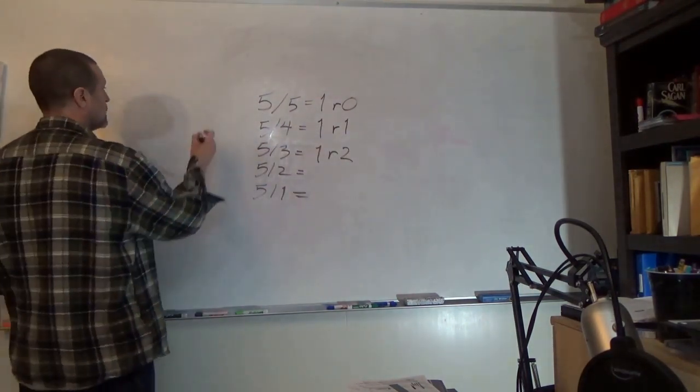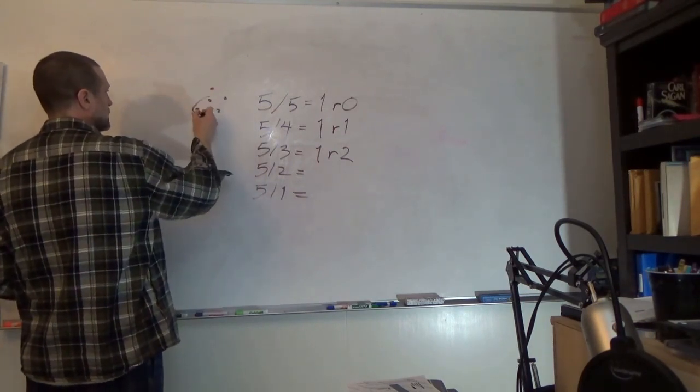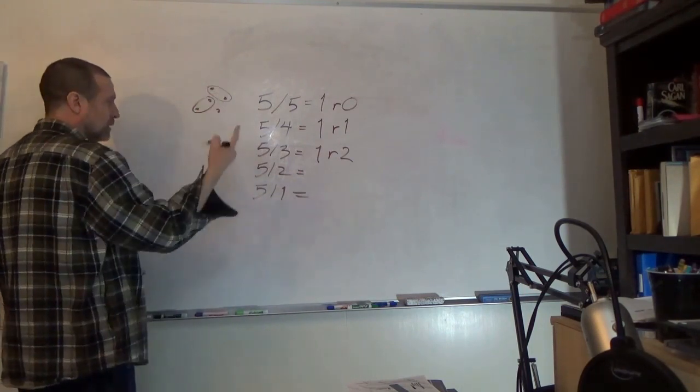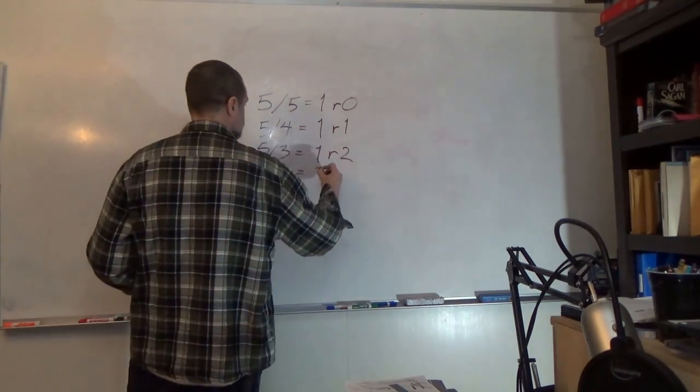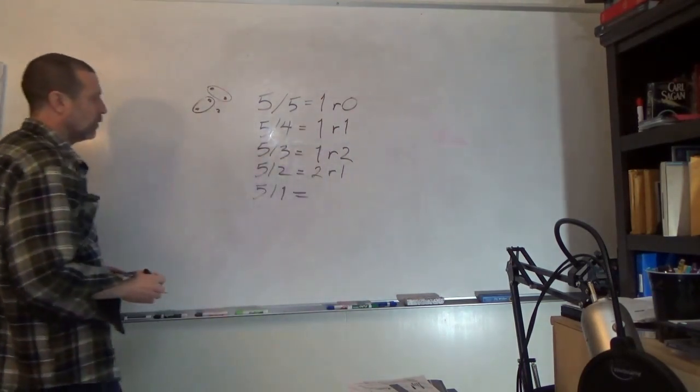5 divided by 2: 2, 2, 1. So I get 2 groups, remainder of 1.